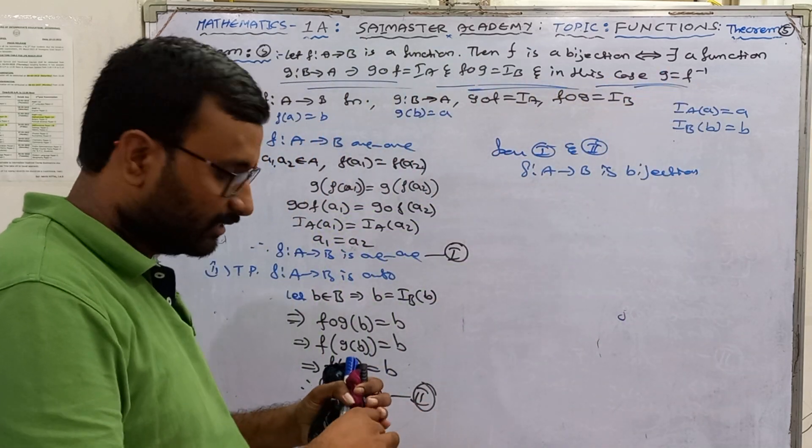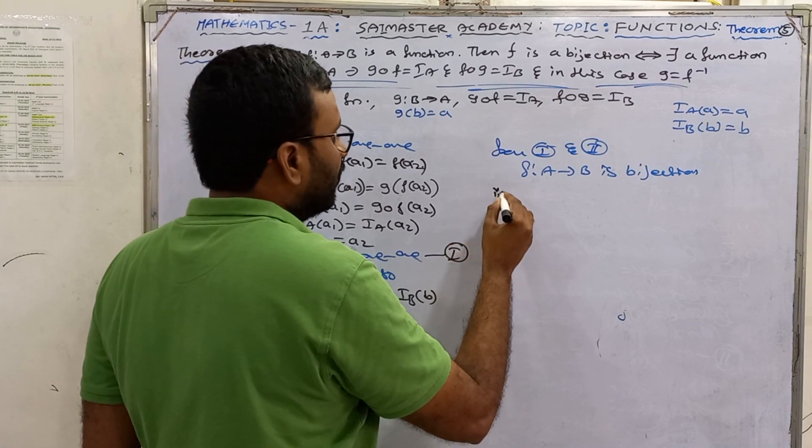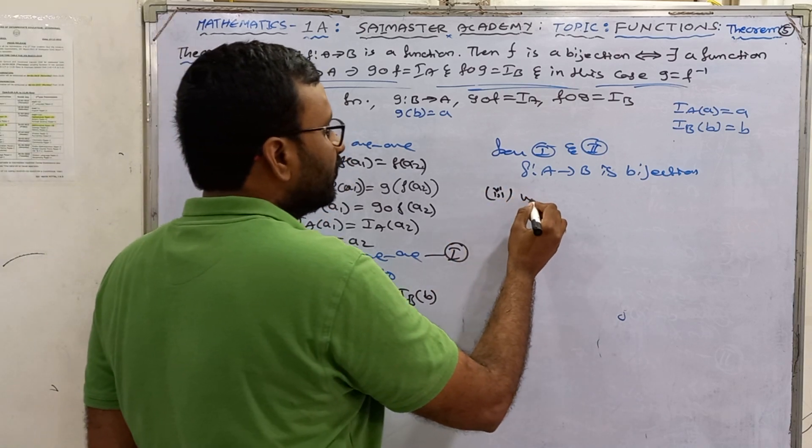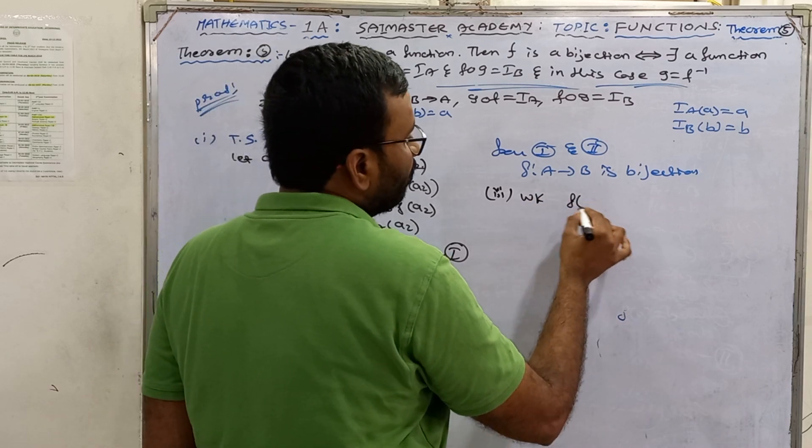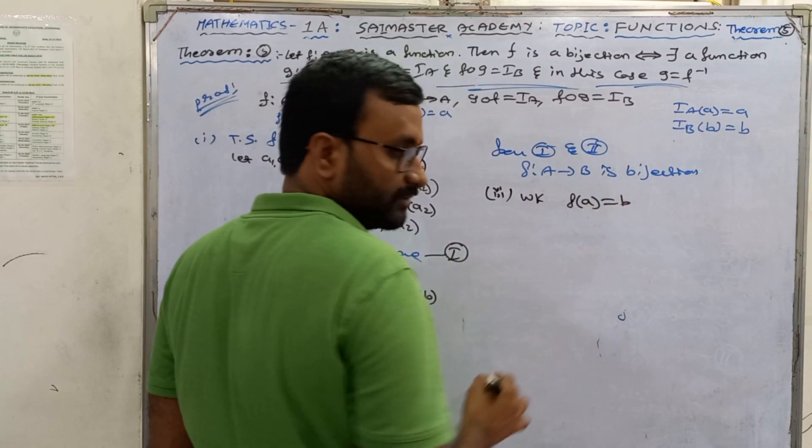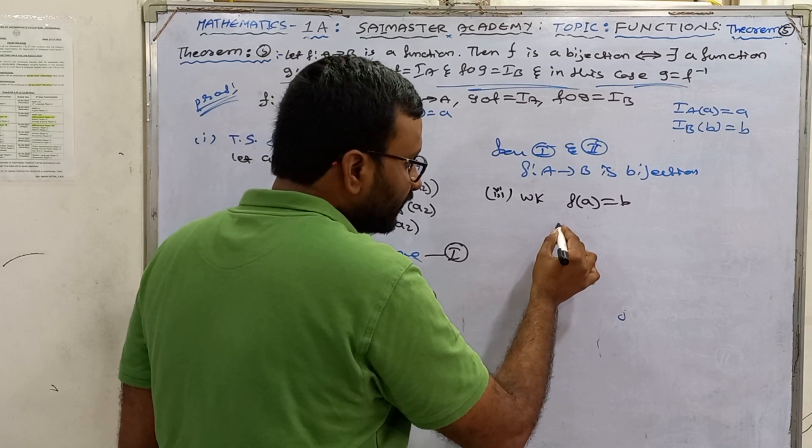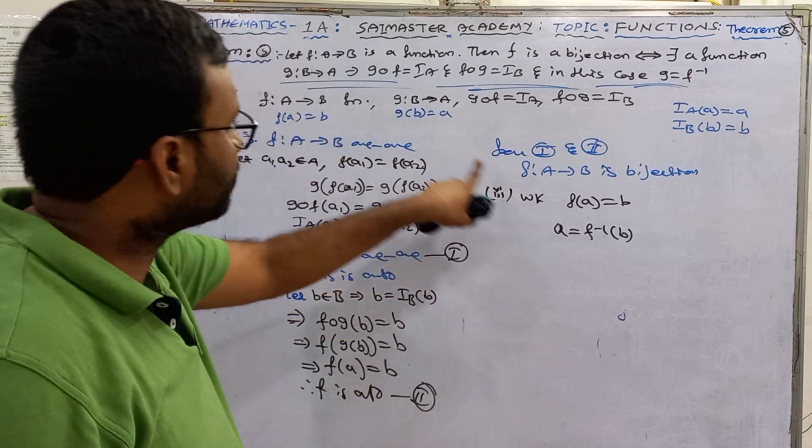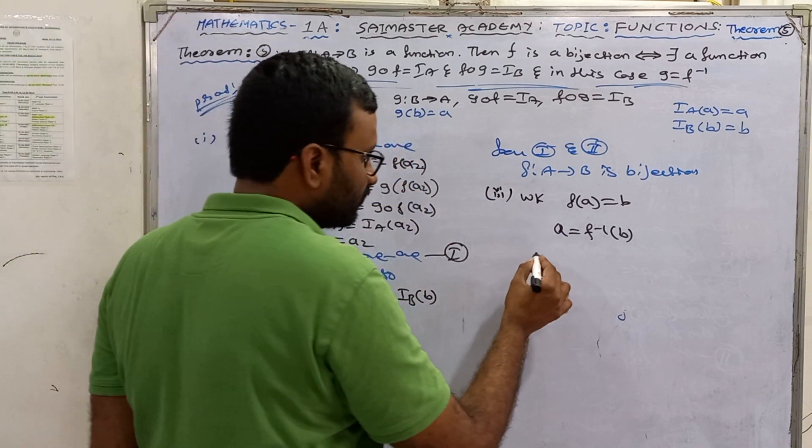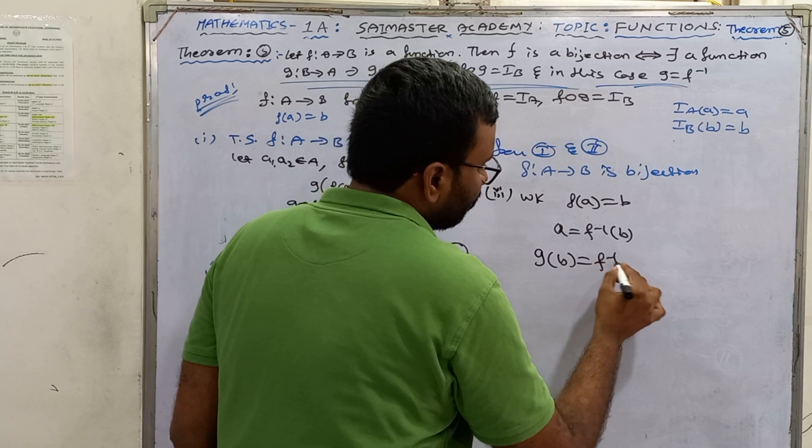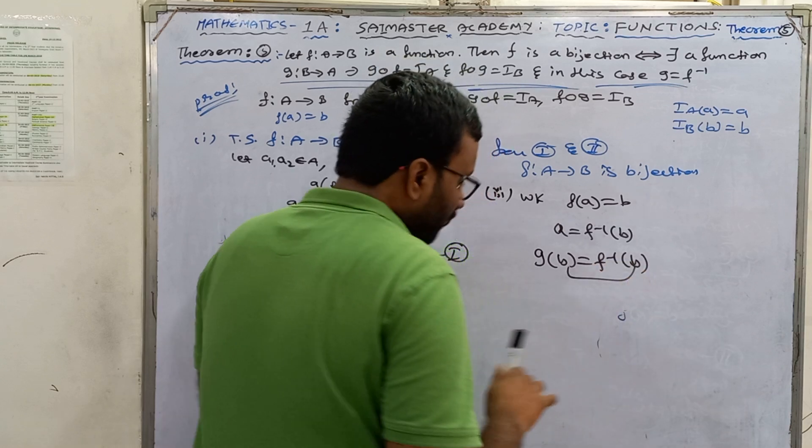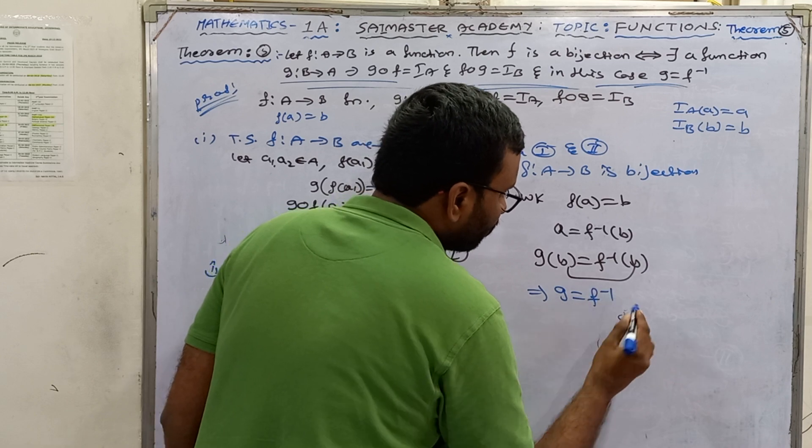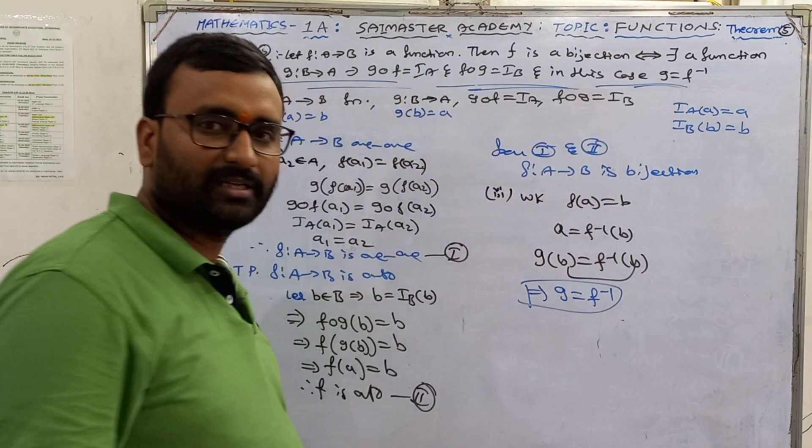And in this case G equal to F inverse. And we know F of a is equal to b. Now we can write a is equal to F inverse of b. F of a and G of b just write. So G of b is equal to F inverse of b. So we can conclude that G equal to F inverse.